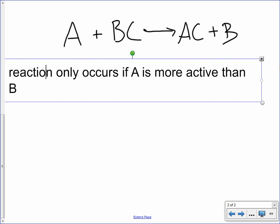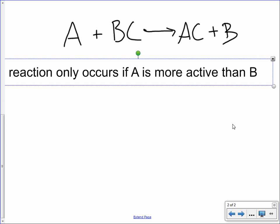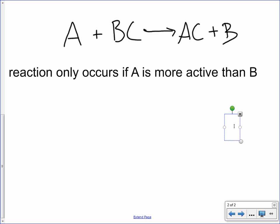And this makes sense because for the reaction to happen, A is going to have to kick B out, put it by itself, right? And the only way it can do that is if it's easier to oxidize than B is. If it's not, reaction doesn't happen.